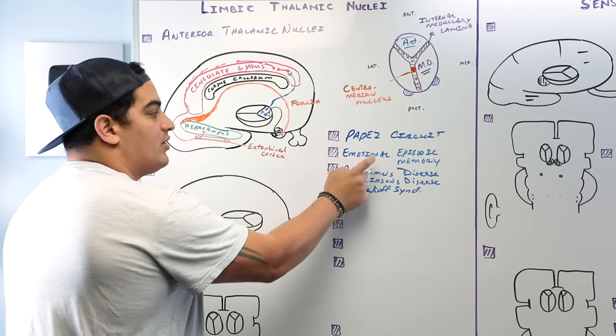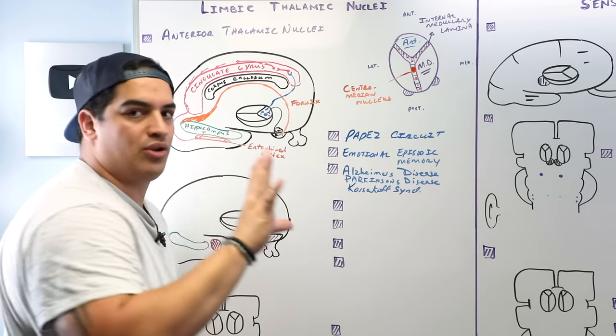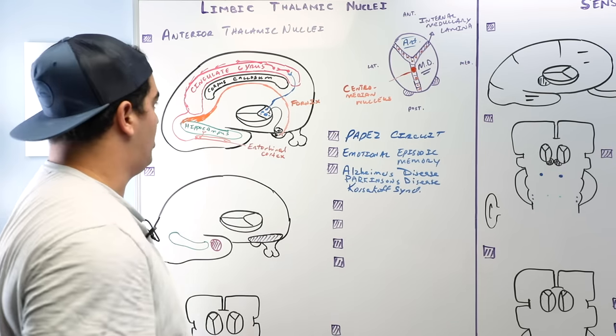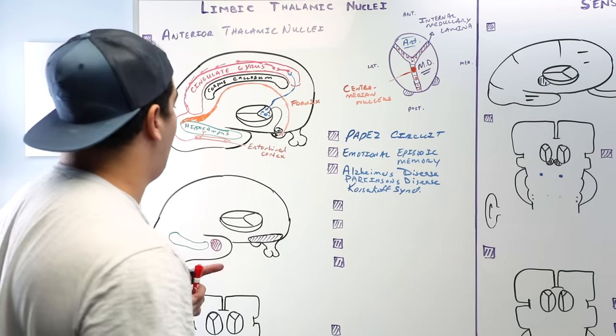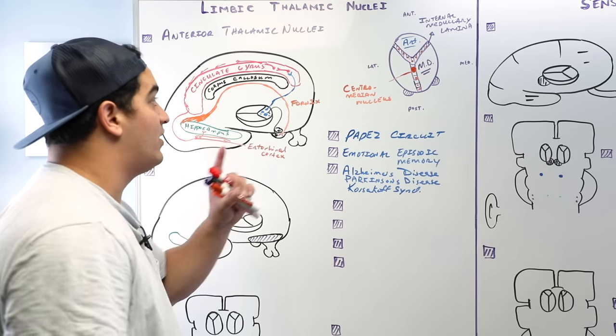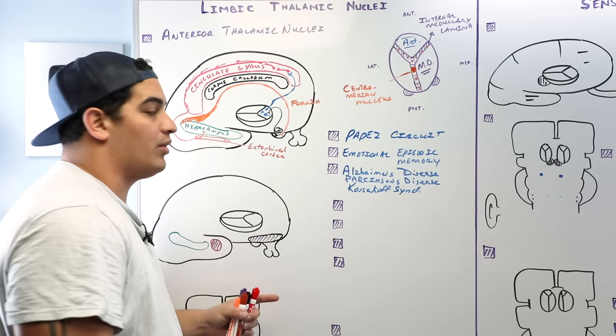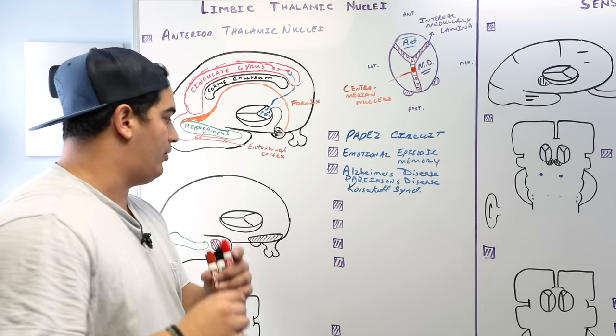The whole purpose of Papez's circuit is emotional episodic memory. With that, we've covered the anterior thalamic nuclei. Let's move on to the next one: the medial dorsal or dorsomedial nucleus.